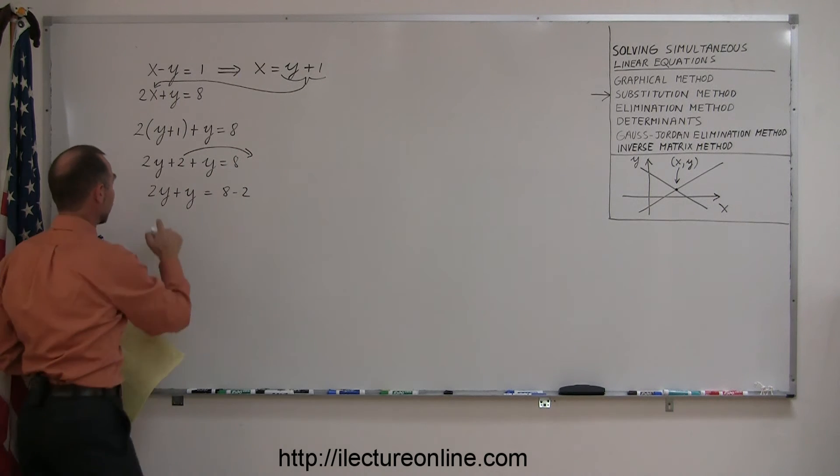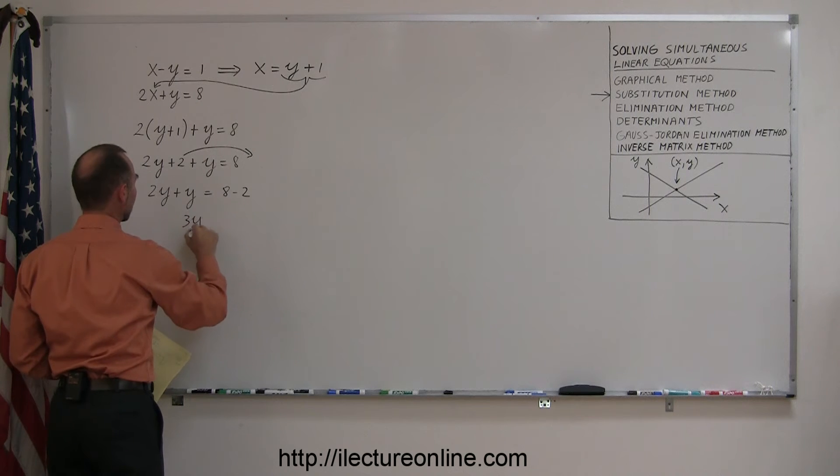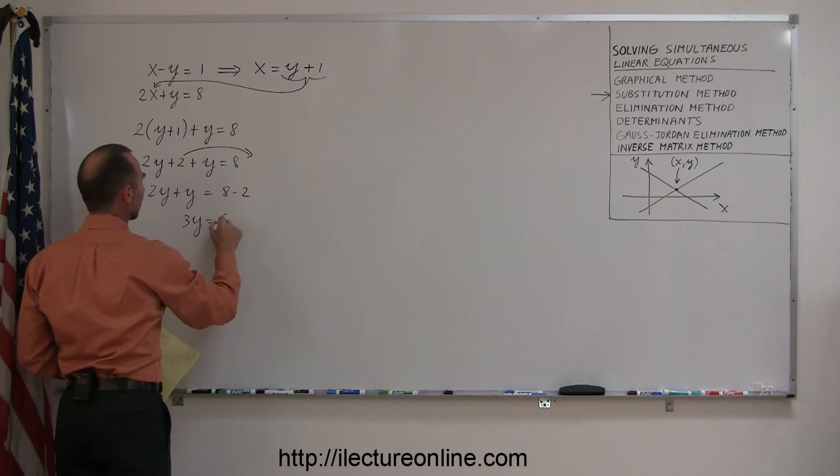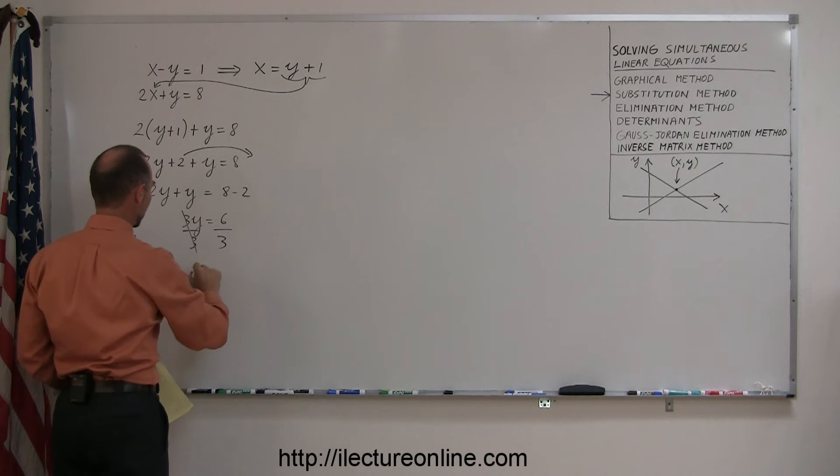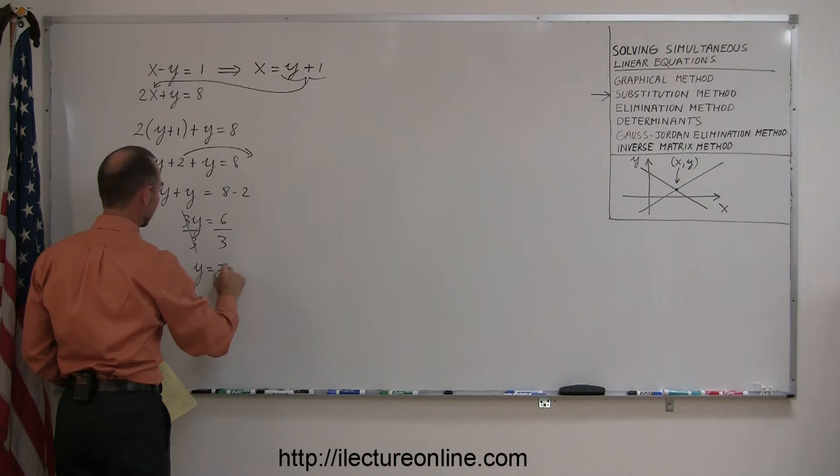Now let's combine like terms. So 2y plus y is 3y. 8 minus 2, that's 6. Now we can divide both sides by the numerical coefficient in front of the y, and so you get y equals 6 divided by 3, which is 2.